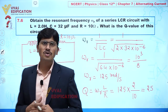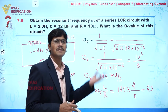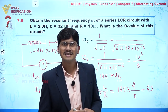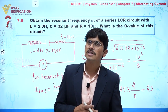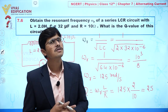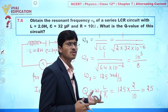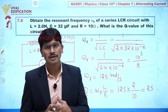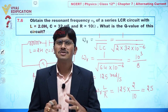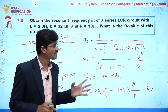The Q value indicates the sharpness of the resonance curve. At resonant frequency we get maximum voltage, and the Q factor tells us how sharp that peak is. This is all about this question.